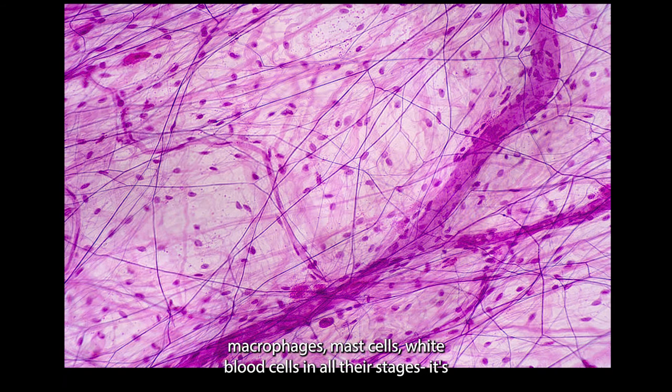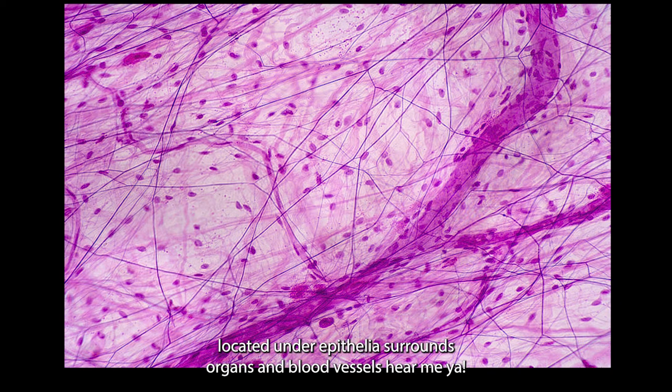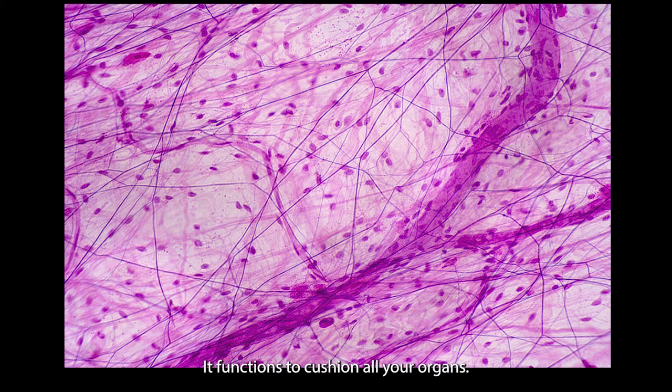Fibroblasts and macrophages, mast cells, white blood cells, and all the stages. It's located under epithelia, surrounds some organs and blood vessels. It functions to cushion all your organs, houses macrophages to defend against infection. It contains a good amount of water - areolar loose connective tissue proper.